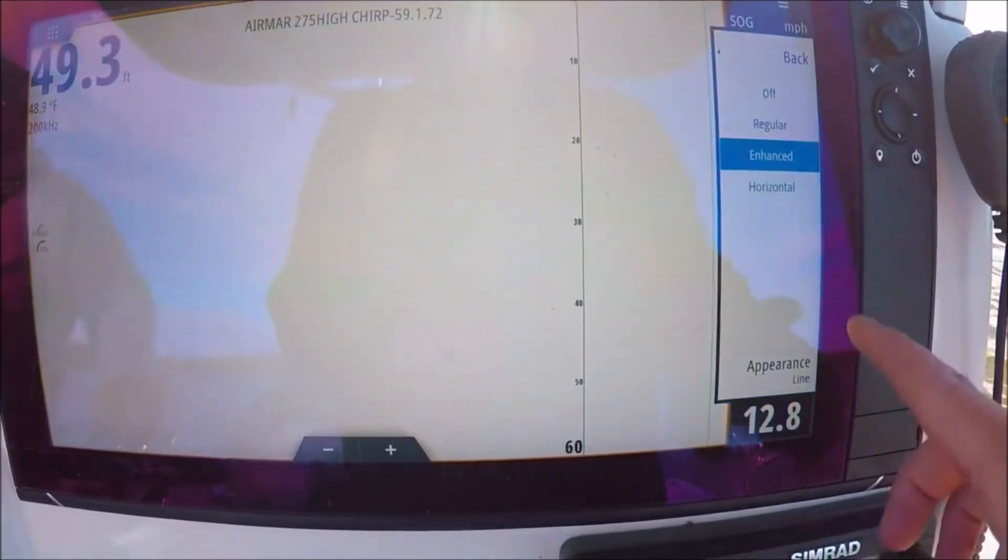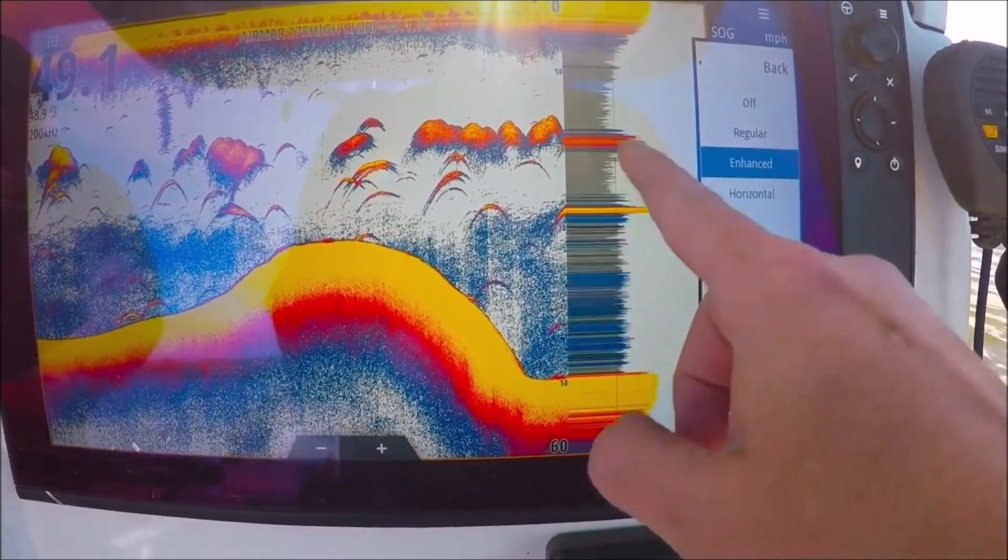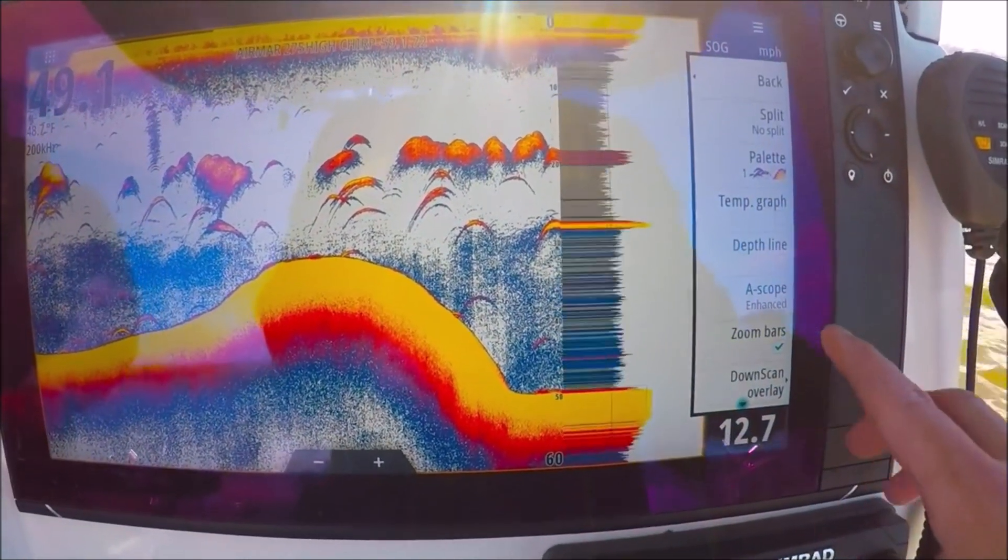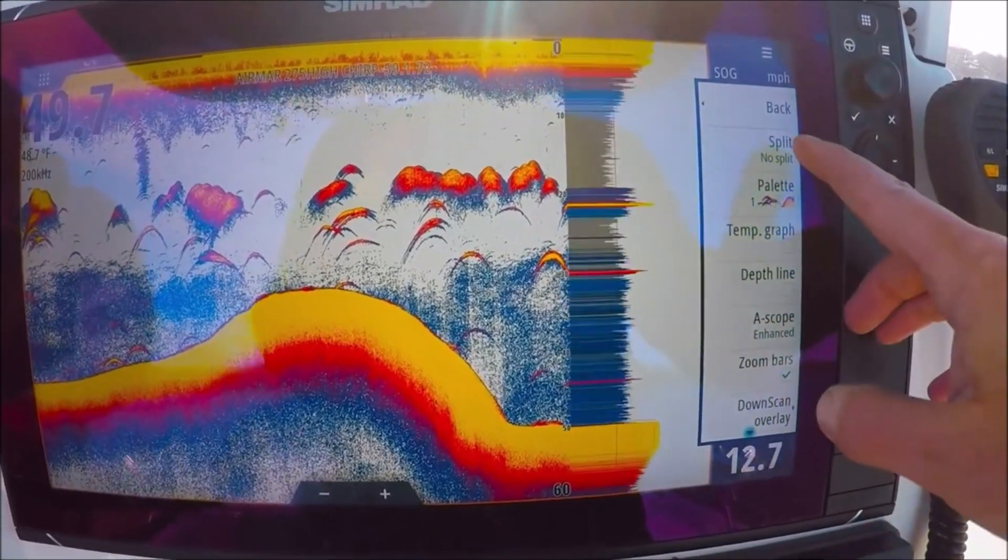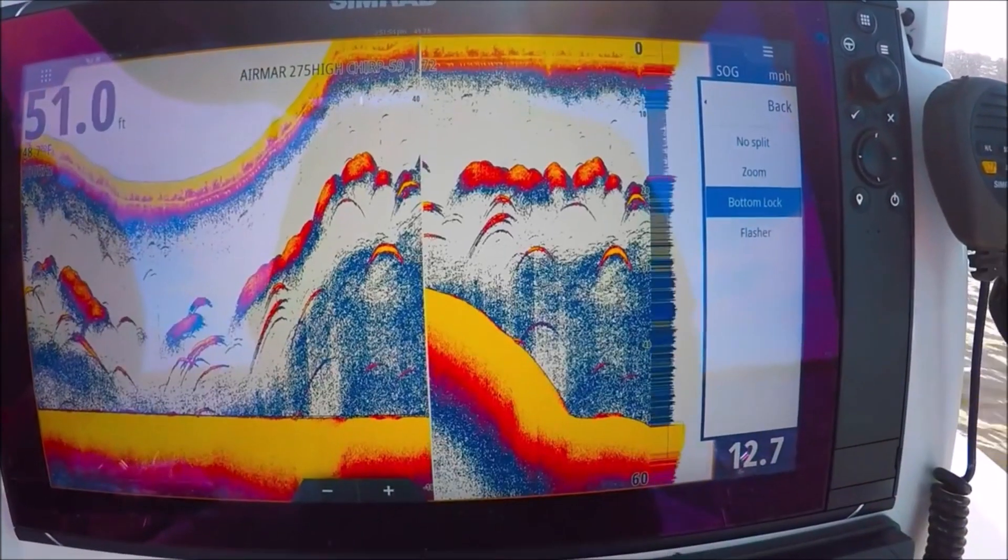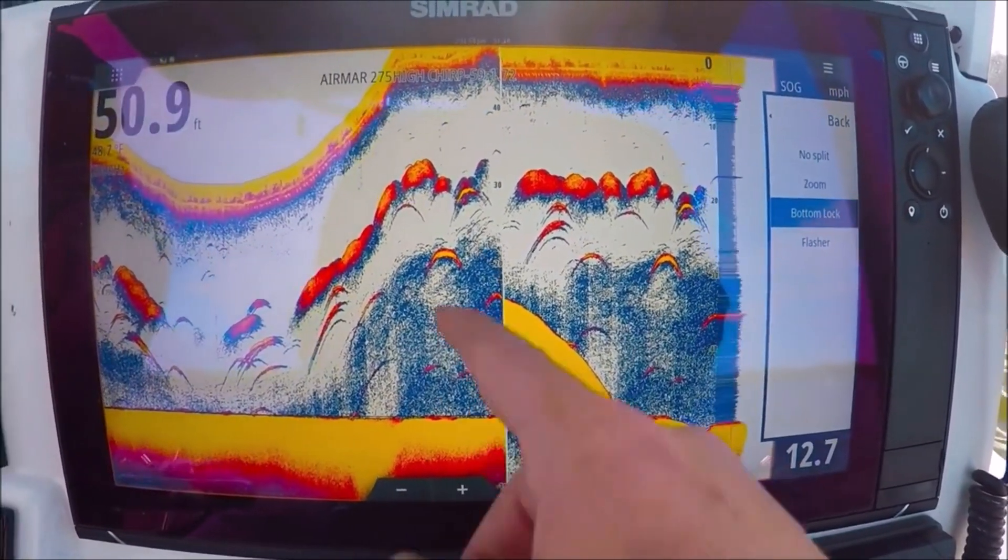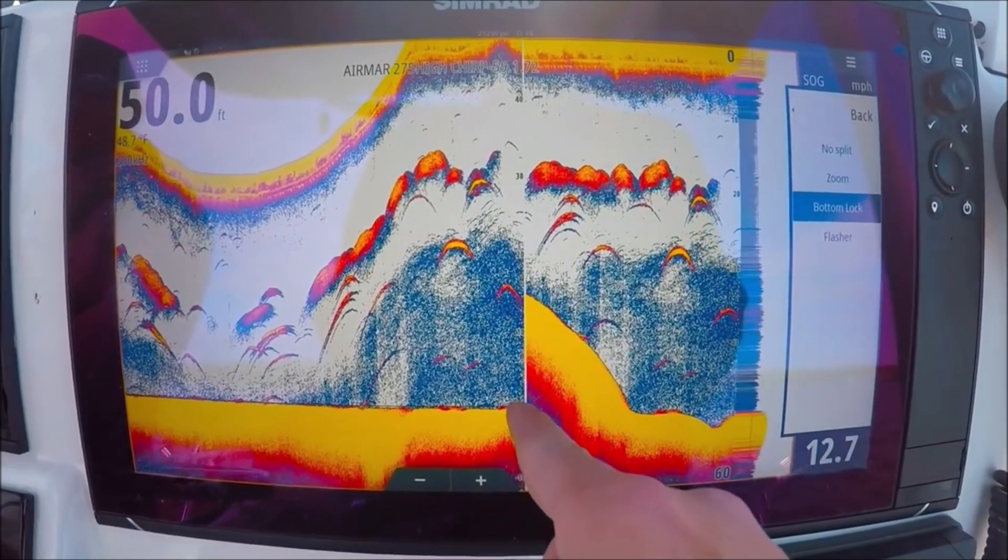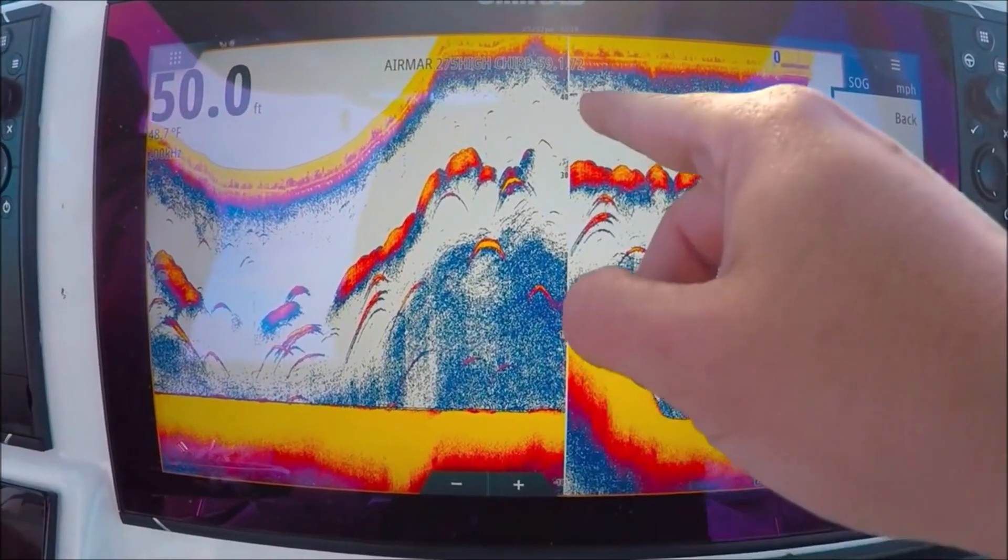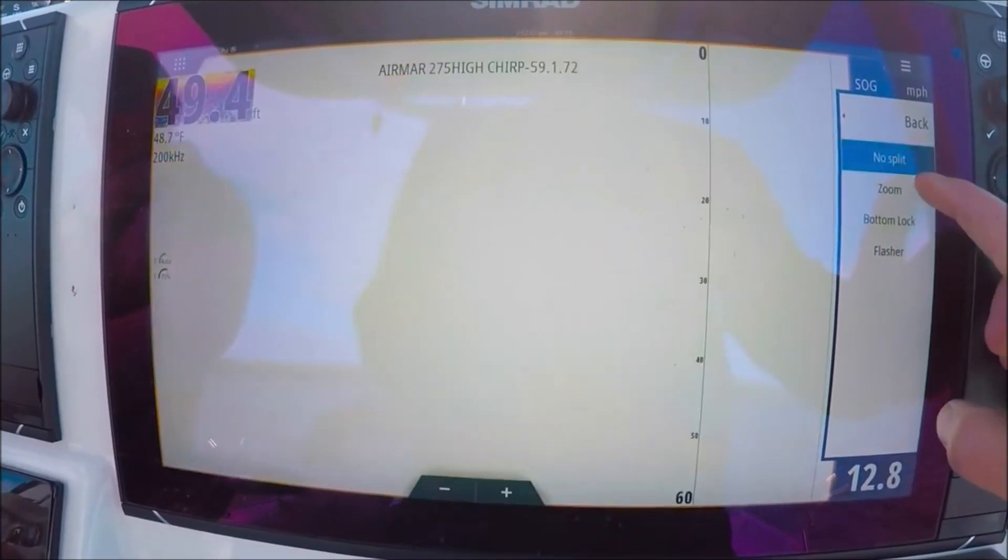Let's go back. I'll leave it on enhanced and color. Back. Okay, we got all kinds of neat stuff here. We can split the screen, bottom lock. You can see the numbers are reversed here: zero, 10, 20, 30. This locks on the bottom. We have no split. We can do zoom.